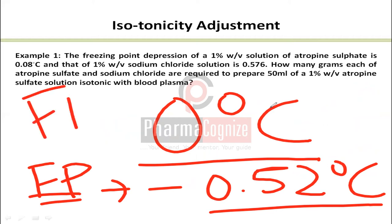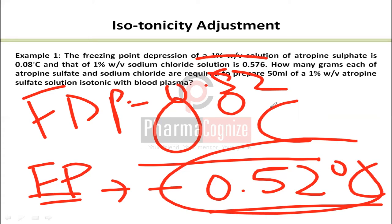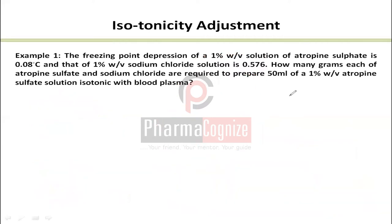The freezing point of blood is minus 0.52°C. So if my solution also has a freezing point of minus 0.52°C, then its freezing point depression equals that of blood. That means one colligative property is the same, and therefore the osmotic pressure will also be the same. This is the key concept: matching the freezing point depression ensures isotonicity.